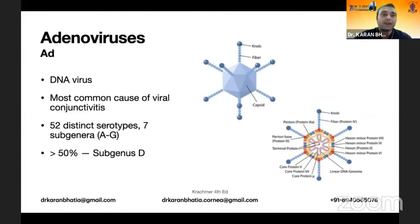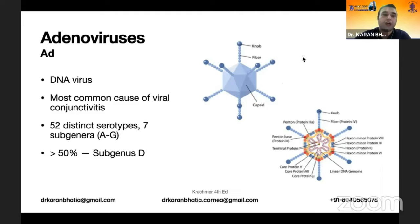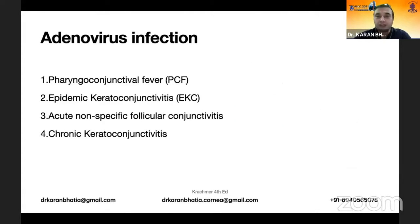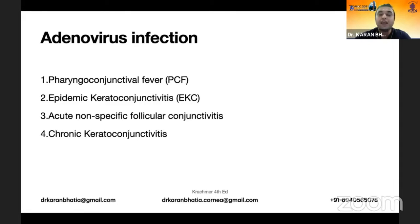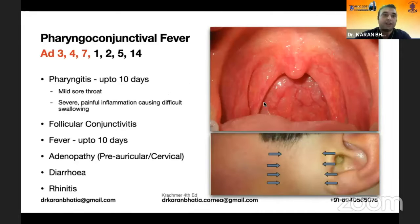Adenoviruses are typically DNA viruses and the most common cause of viral conjunctivitis. There are 52 distinct serotypes and more than 50% belong to subgenus D. Adenovirus infection can be characterized into four types: pharyngoconjunctival fever, epidemic keratoconjunctivitis, acute nonspecific follicular conjunctivitis, and chronic keratoconjunctivitis.